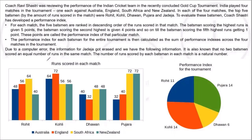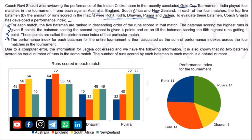Set 66: Coach Ravi Shastri was reviewing the performance of the Indian cricket team in the Gold Cup tournament. India played four matches — against Australia, England, South Africa, and New Zealand. The top five batsmen by runs scored in each match were Rohit, Kohli, Dhawan, Pujara, and Jadeja. Coach Shastri developed a performance index to evaluate these batsmen, but due to a computer error, Jadeja's information was erased.